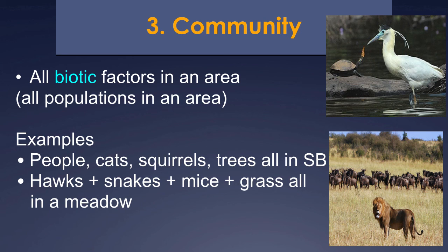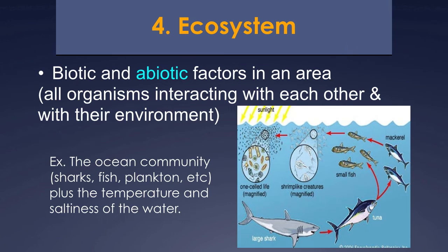After community, the next level is ecosystem. An ecosystem is biotic and abiotic factors in an area. Bio means life, so we have living and non-living. Abiotic — the prefix 'a' means not, so abiotic means non-living. So an ecosystem includes all the organisms that interact with each other and their environment — both the living and non-living parts.